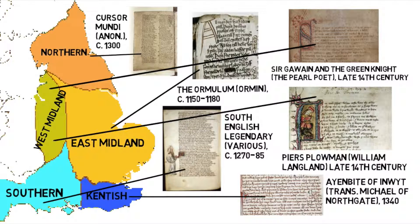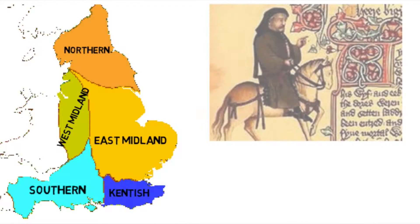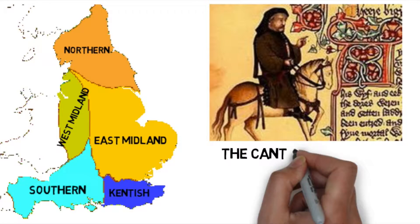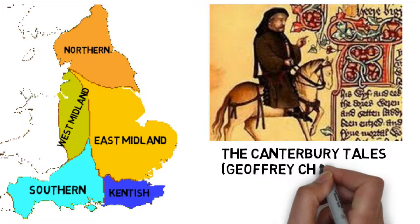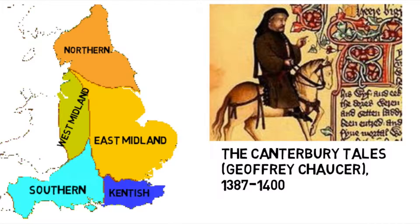These are just examples, of course. There were many other works written during this period, but there's one that stands out above all the others, both as literature and as a very important influence on the English language. And that is The Canterbury Tales of Geoffrey Chaucer. Chaucer's work helped to put the dialect that was developing in the area around London on the map and establish it as the standard form for English, which became the basis of Early Modern English later on in the 15th century.